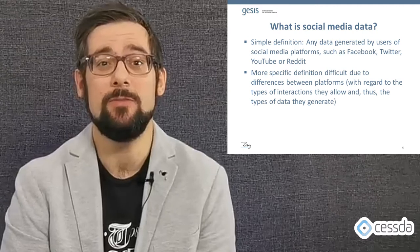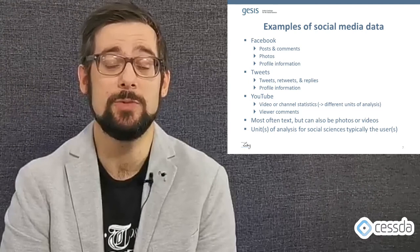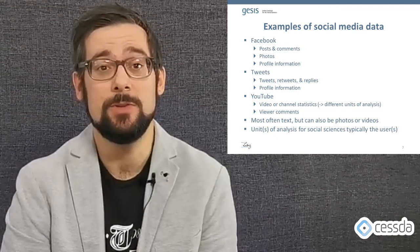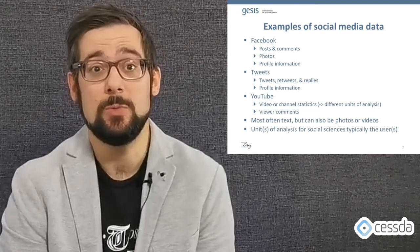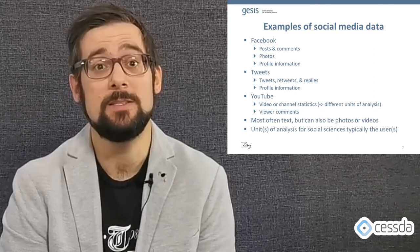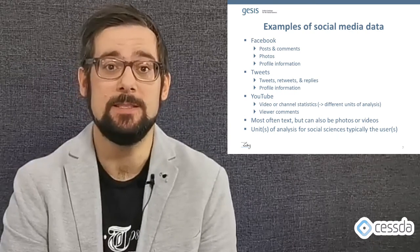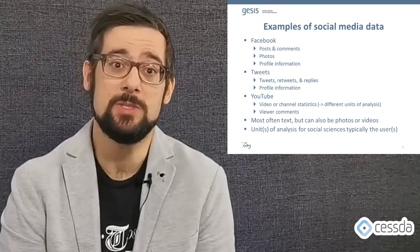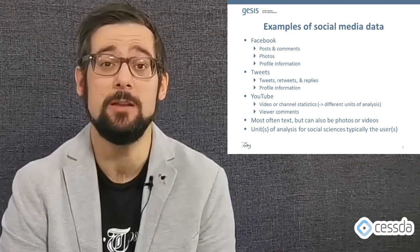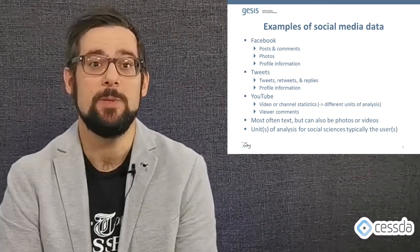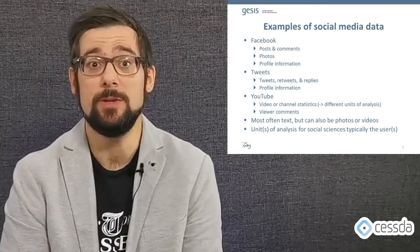It's easier to think of examples of social media data that you can collect. For Facebook, these could be posts or photos, or profile information from users. For Twitter, these could be tweets, retweets, and replies, as well as profile information. And for YouTube, these could be channel statistics, video statistics, or viewer comments. Usually the unit of analysis in the social sciences is the individual user, but with YouTube video statistics, your unit of analysis would be the video or channel. Most times people work with textual data, but it could also be audio, video, or images.